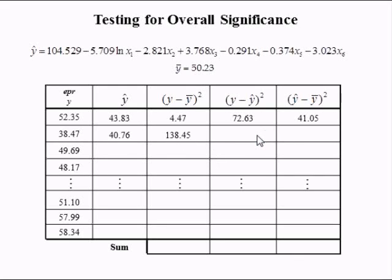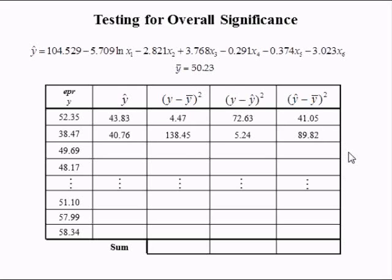The second residual squared was 5.24. The second squared deviation between the predicted value of y and its mean is 89.82.